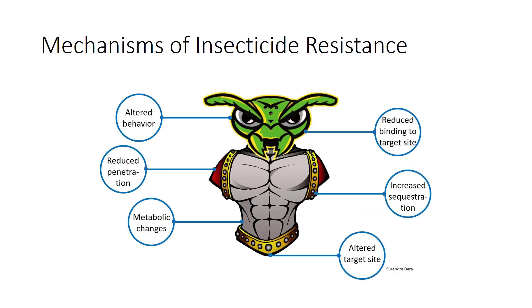Mechanisms of insecticide resistance include increased behavioral avoidance, as some insecticides such as neem and pyrethroids can repel insects, and physiological changes such as sequestration — trapping toxic chemicals in specialized tissues — reduced cuticular penetration, or accelerated excretion. Other mechanisms include metabolic detoxification by specialized enzymes and increased tolerance as a result of decreased sensitivity at the insecticide target site.